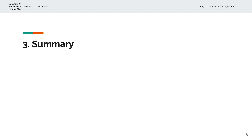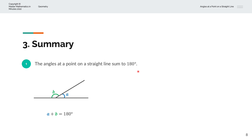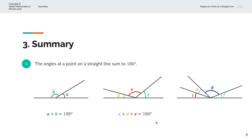To summarise, the angles at a point on a straight line sum to 180 degrees. In the case with two lines, a plus b equals 180 degrees. With three lines, c plus d plus e equals 180 degrees. And with four lines and four angles, f plus g plus h plus i equals 180 degrees. Thank you very much for watching. This is Master Mathematics in Minutes.